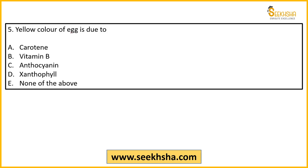Next question: The yellow color inside an egg — sometimes the shell is also yellow and the yolk is yellow — why is it yellow? Due to the presence of which compound? Options: A) Carotene, B) Melamine B, C) Anthocyanin, D) Xanthophyll, E) None of the above.